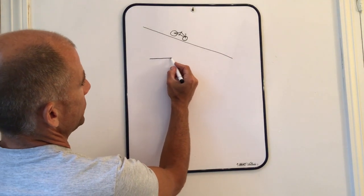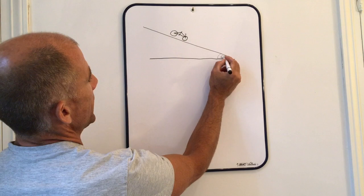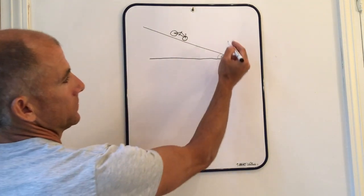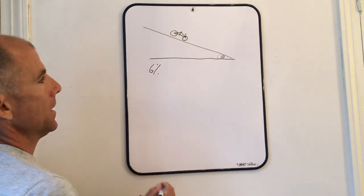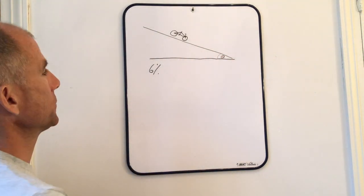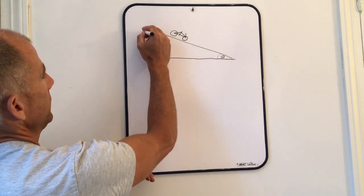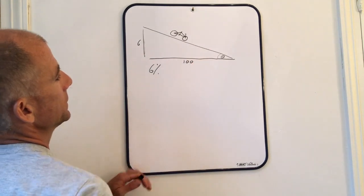What we need to do first of all is establish what the slope angle is. When we talk about 6% slopes for example, it doesn't mean that the angle is 6 degrees. What it means is that you're going up or down 6 meters for every 100 meters long.